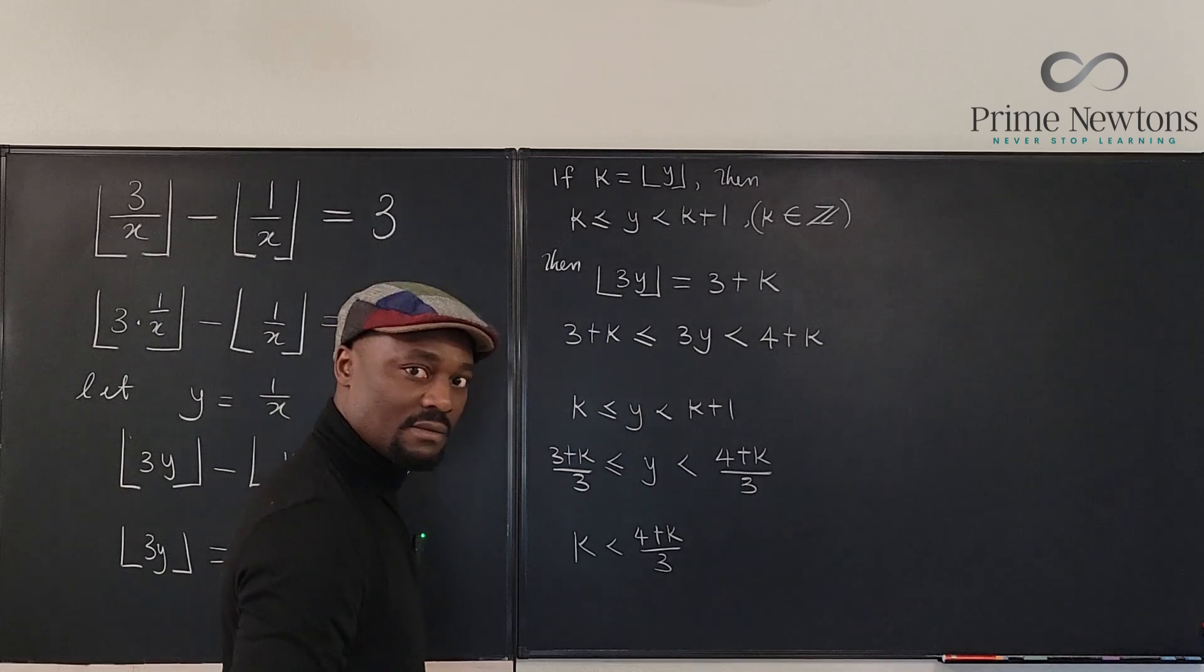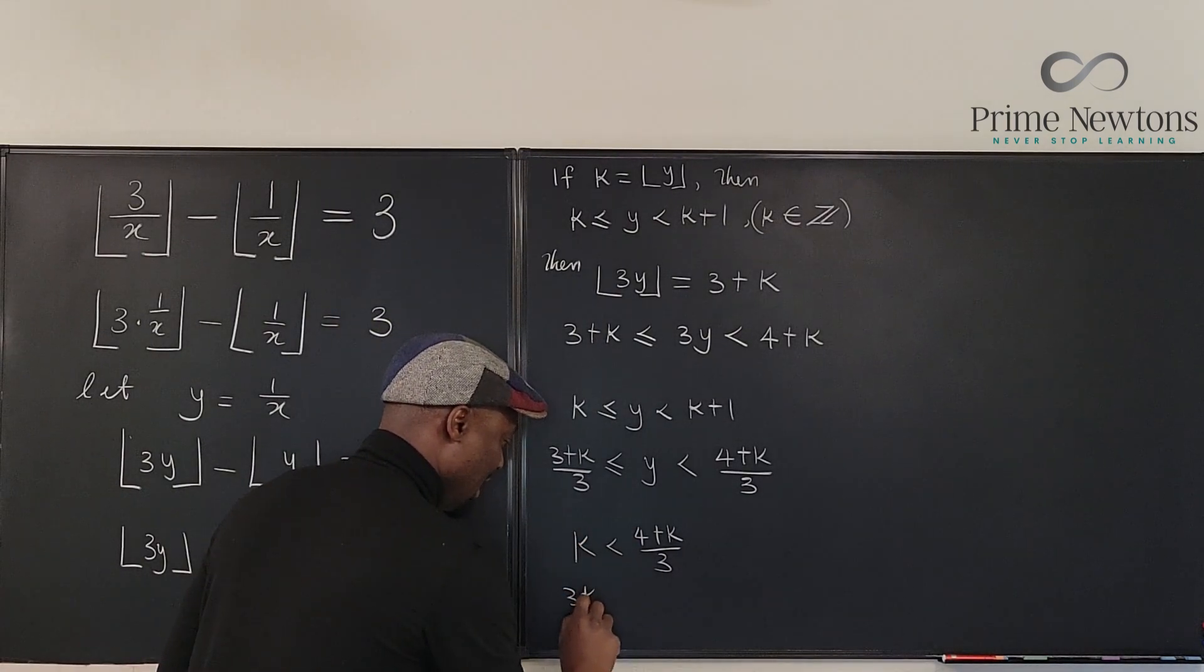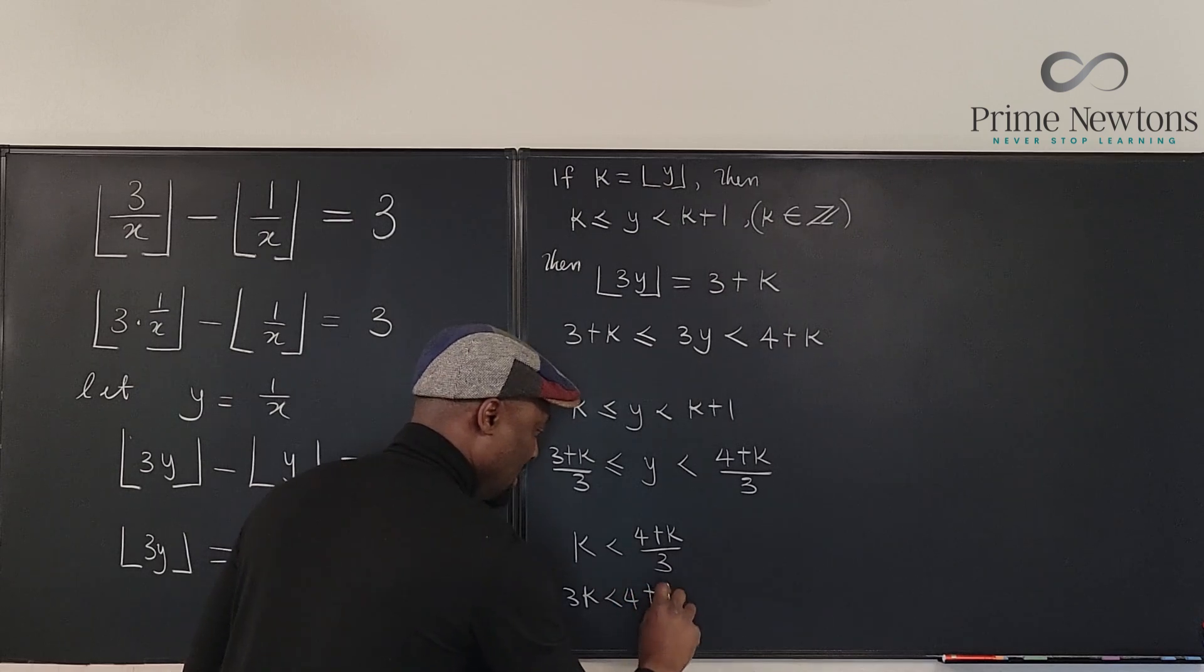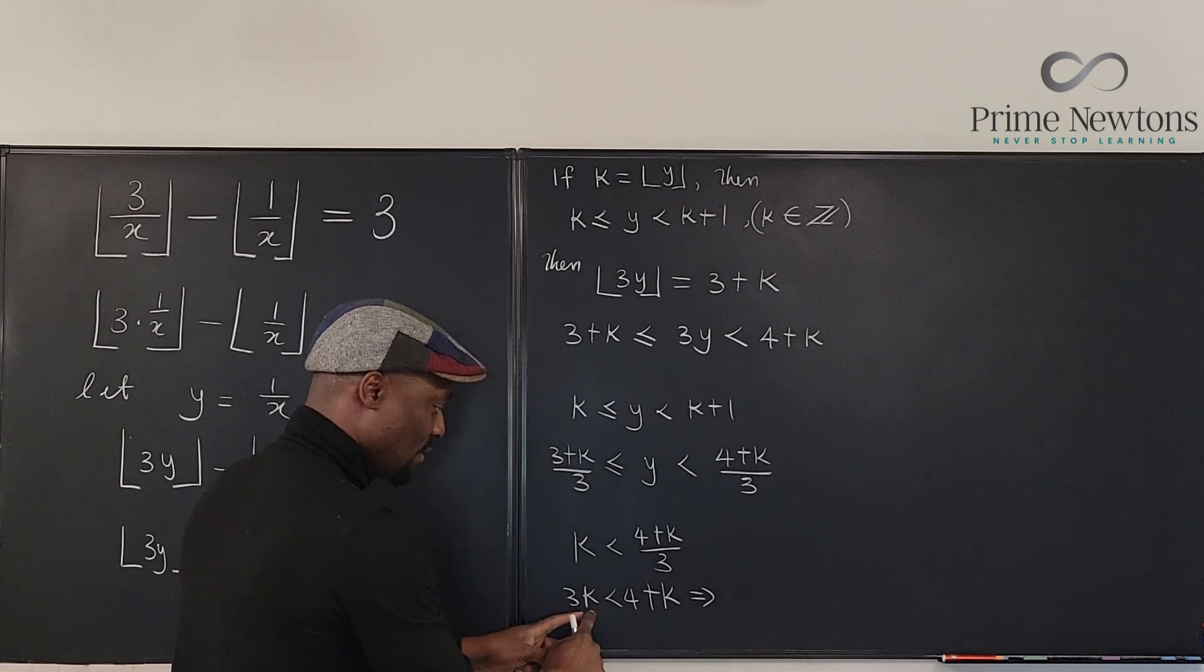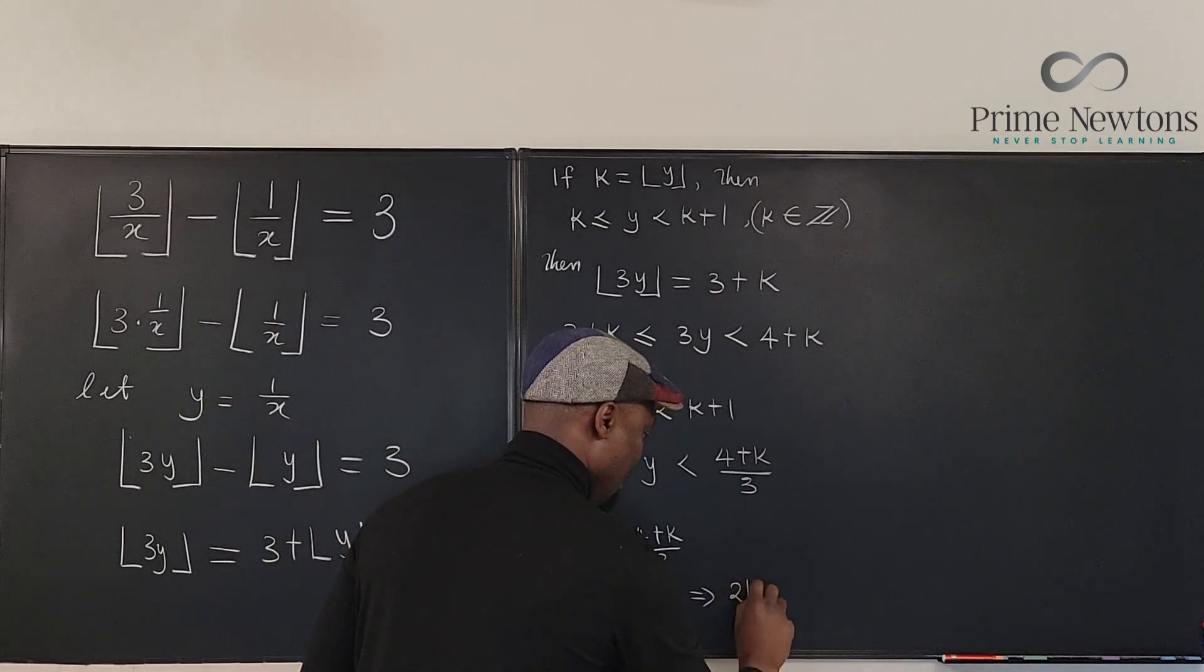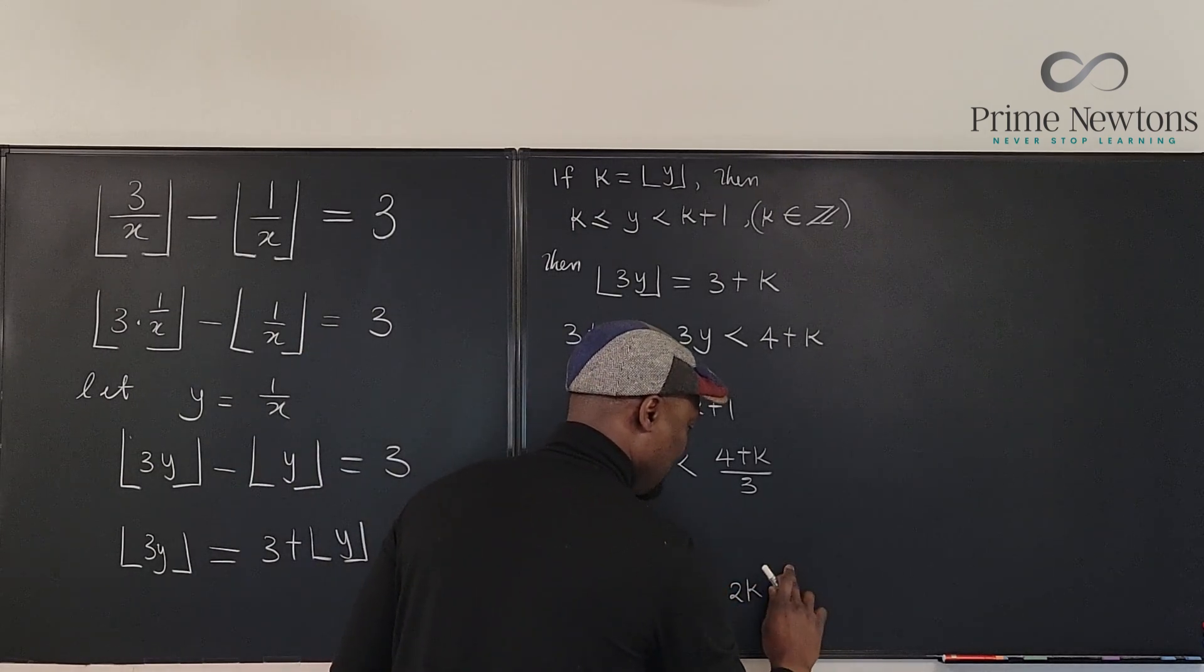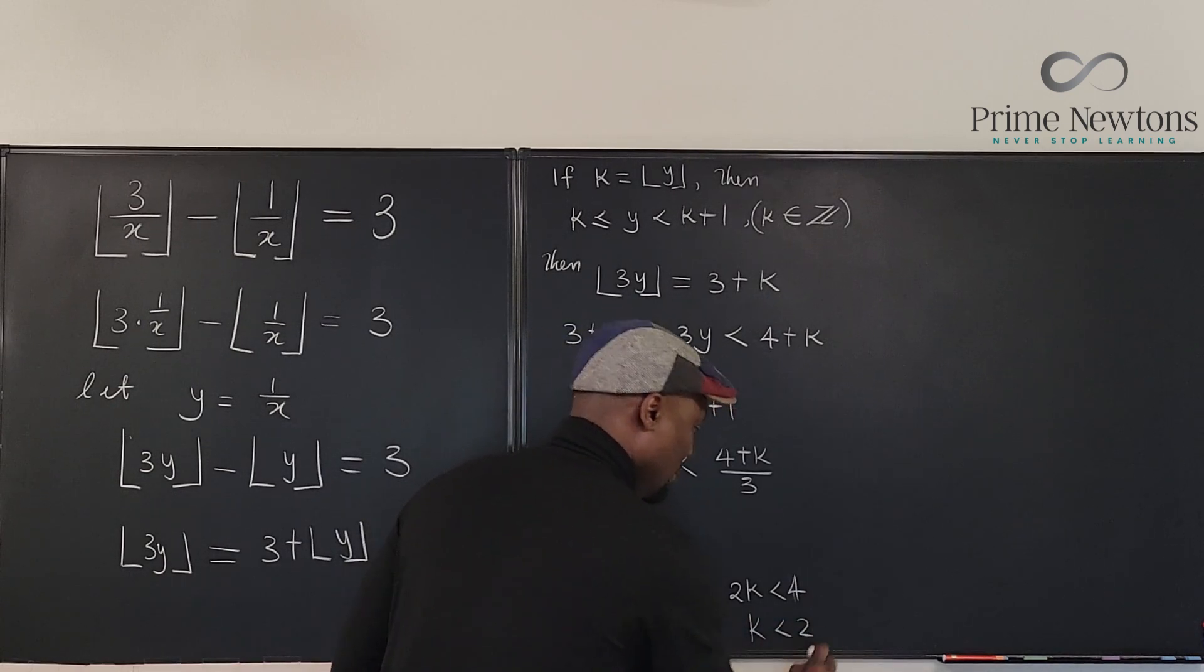So if I connect these two I know that k is less than 4 plus k over 3. That is certain. If I solve for k here, I'm going to have 3k is less than 4 plus k, which means if I move k here I have 2k is less than 4, and that means so we have 2k is less than 4, and that means that k is less than 2.